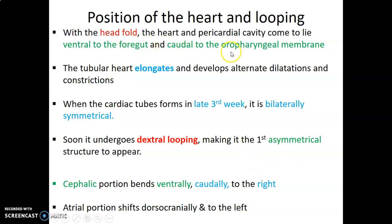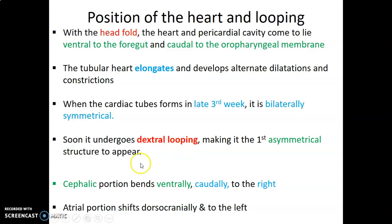What determines the position of the heart? With the head fold, the heart and pericardial cavity come to lie ventral to the foregut and caudal to the oropharyngeal membrane — so the heart is below the mouth. The tubular heart elongates, then develops dilatations and constrictions. The heart tube forms in the late third week as right and left symmetrical structures, but after dextral looping, the first asymmetrical structure appears.